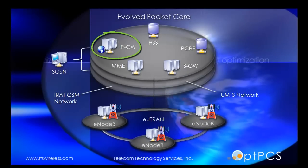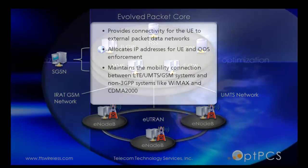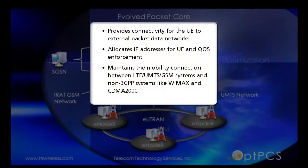Packet Switched Data Network Gateway (PGW) – It provides connectivity for the UE to external packet data networks. It allocates IP addresses for the UE and enforces quality of service. It maintains the mobility connection between LTE, UMTS, and GSM systems, as well as non-3GPP systems like WiMAX and CDMA2000.